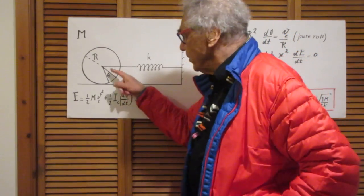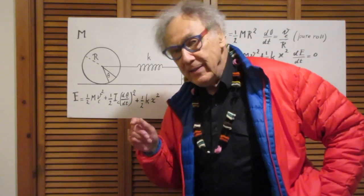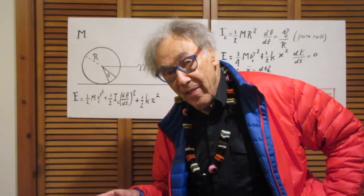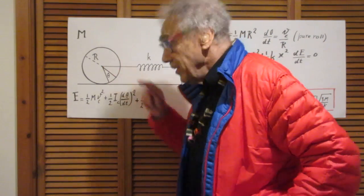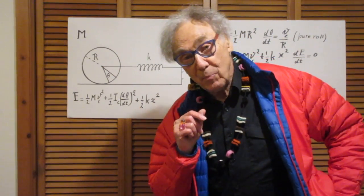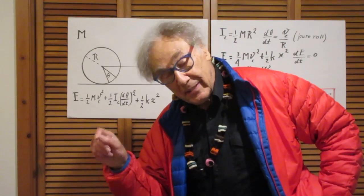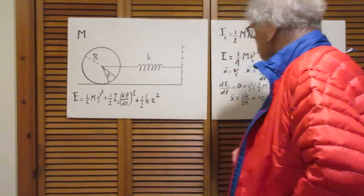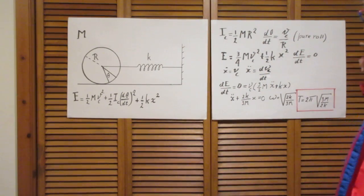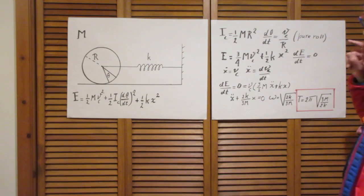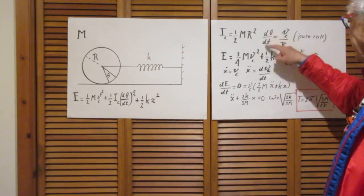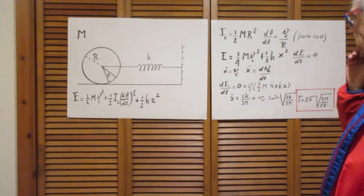And so if you now take the derivative, you take d theta dt, that means it is not the distance that the center of mass has moved, but it is the speed. dx dt is speed. Okay, so you see immediately that the pure roll condition is that r times d theta dt is the speed of the center of mass.